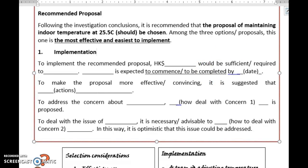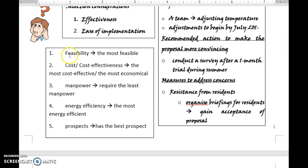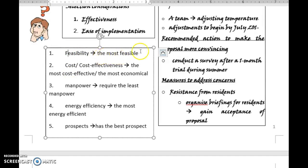I've also compiled a list of considerations for your reference. In case if you see the word feasibility, change it to the most feasible. Cost, cost-effectiveness - the adjective form should be cost-effective or economical. Never say the cheapest. Manpower - change it to require the least manpower. Energy efficiency - change it to the most energy efficient. Prospects - you would say it has the best prospect. So this is a list of considerations.